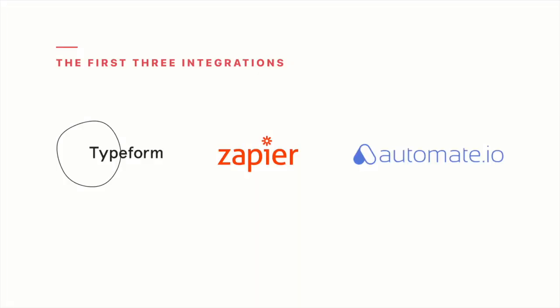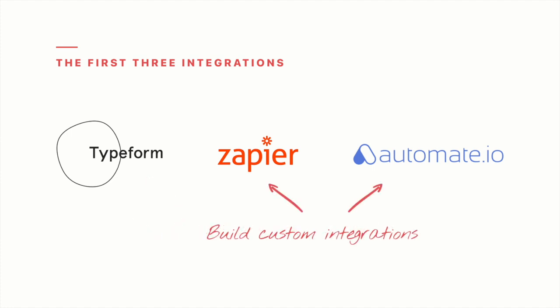At the debut of the API, Notion offers three official integrations. One is Typeform, which is a tool used for creating online forms — through the integration you can send form submissions directly to a Notion database. The other two integrations are services that allow you to create custom integrations with apps that don't yet have official integrations: Zapier and Automate.io. So let's look first at the Typeform integration.